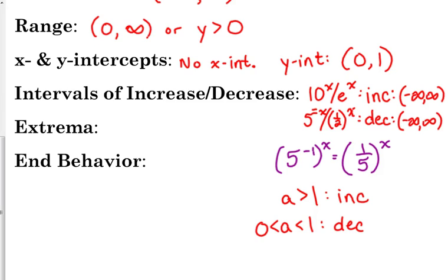3 halves is going to be an increasing exponential function. So don't just say if it's a fraction, then it's going to be decreasing, but if it's a fraction less than 1, it is decreasing. So you should be able to tell me that right off the bat, just looking at the equation, whether it's an increasing or decreasing exponential function.